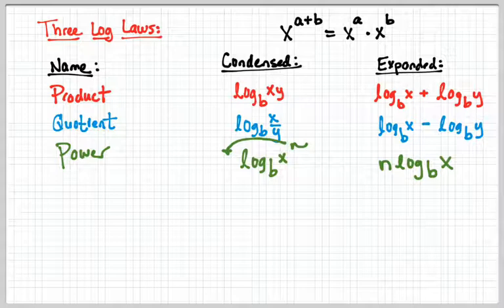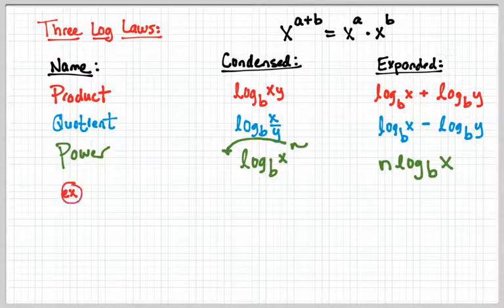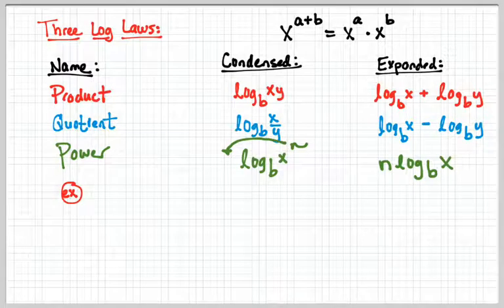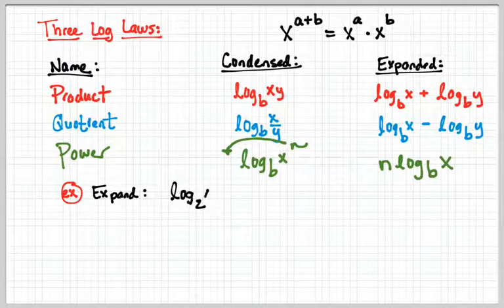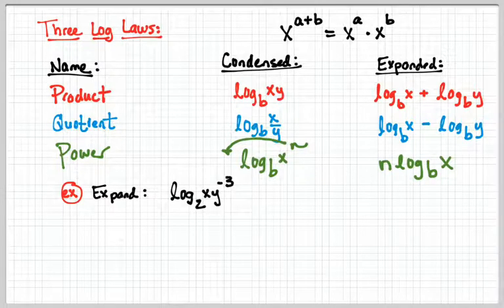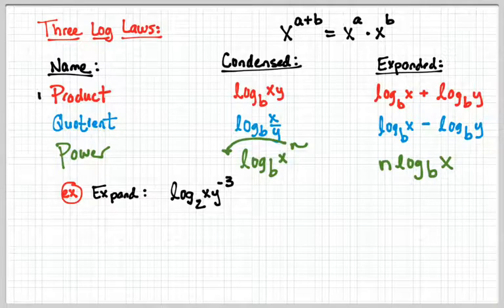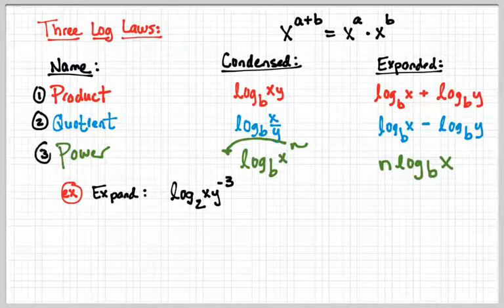Let's do an example at the bottom. We're going to do one expansion, and then we'll do a couple condensing problems. We are going to expand log base 2 of xy^(-3). I want you to talk to your group which properties you're going to use, but the higher level question is what order are you going to use them in.